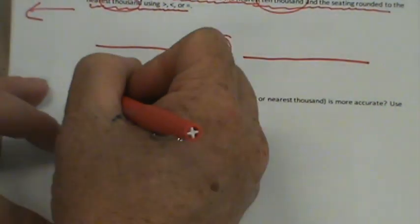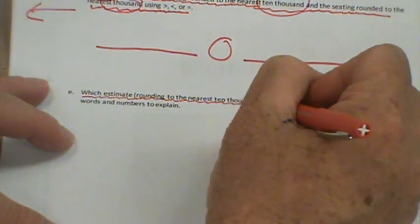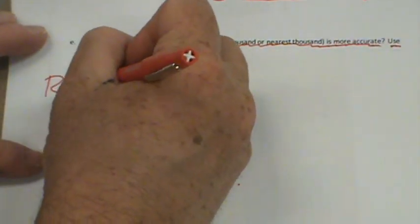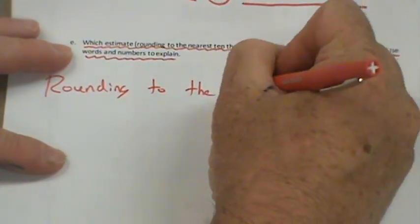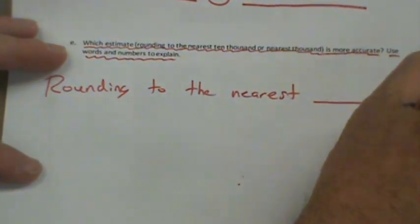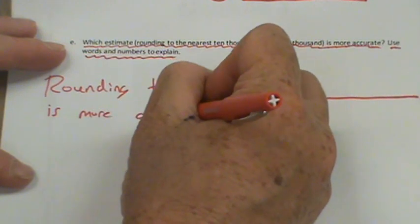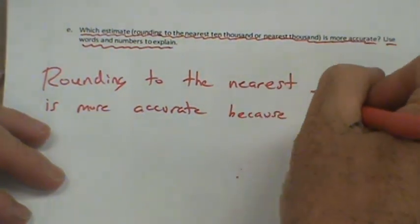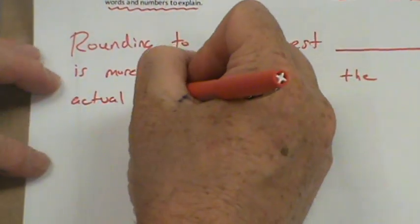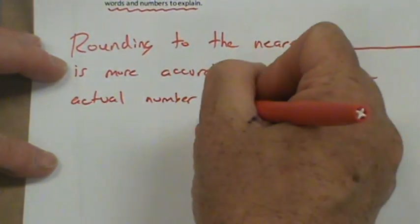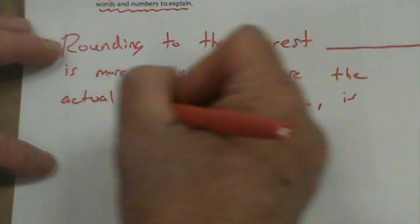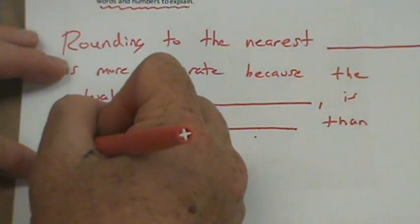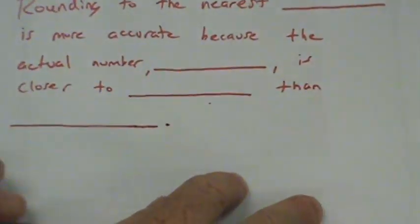Now, it's going to say, our final question is, which estimate rounding to the nearest 10,000 or nearest 1,000 is more accurate? Use words and numbers to explain. We're going to do a little fill in the blank. Rounding to the nearest blank is more accurate because the actual number blank is closer to blank than blank.